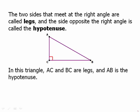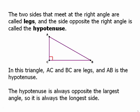In this triangle, AC and BC are the legs and AB is the hypotenuse. The hypotenuse is always opposite the largest angle, the 90 degree angle, and so the hypotenuse is always the longest side of a right triangle.